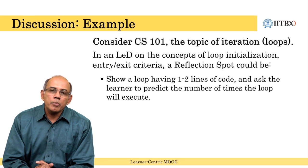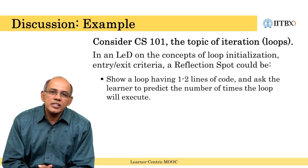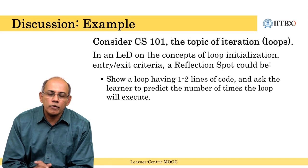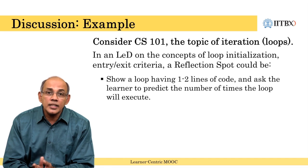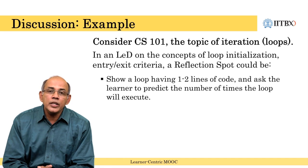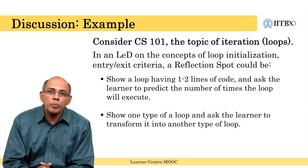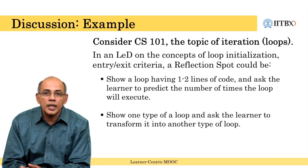Continuing with the same example, another reflection spot could be to show one or two lines of code of a loop and ask the learner to predict the output. A third type could be to show one type of loop and ask the learner to think about how it can be transformed into another type. In this way, for the same topic of comparing different types of loops, multiple reflection spots can be introduced in an LED.